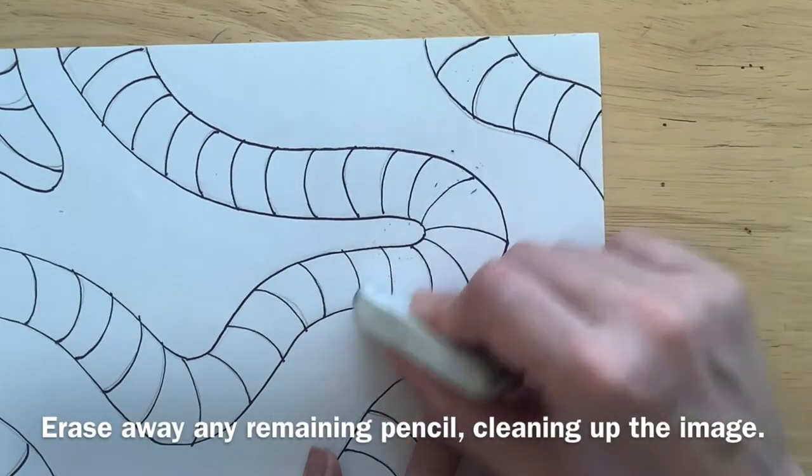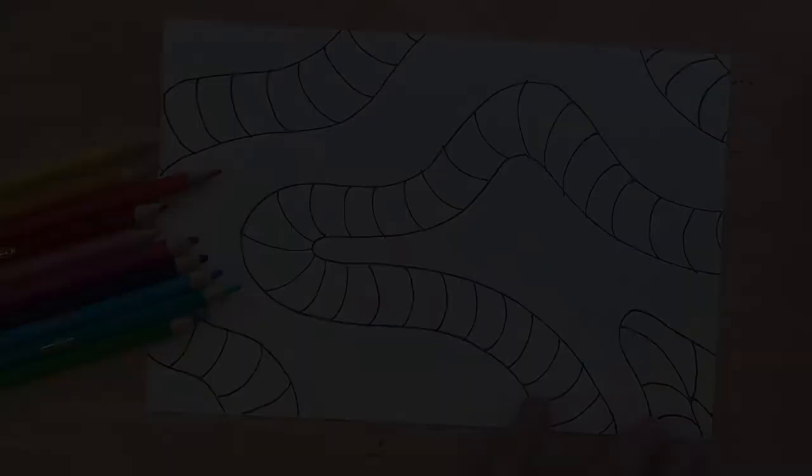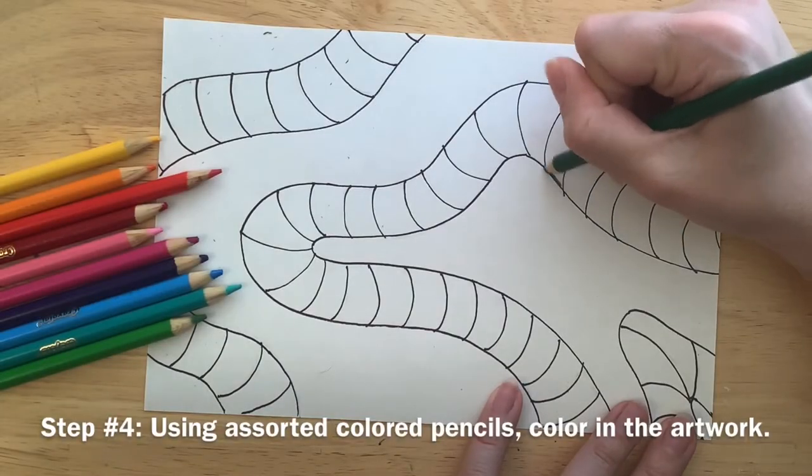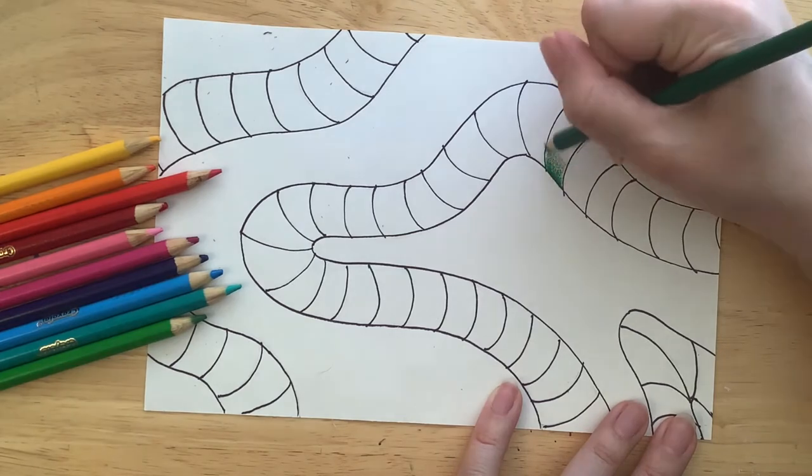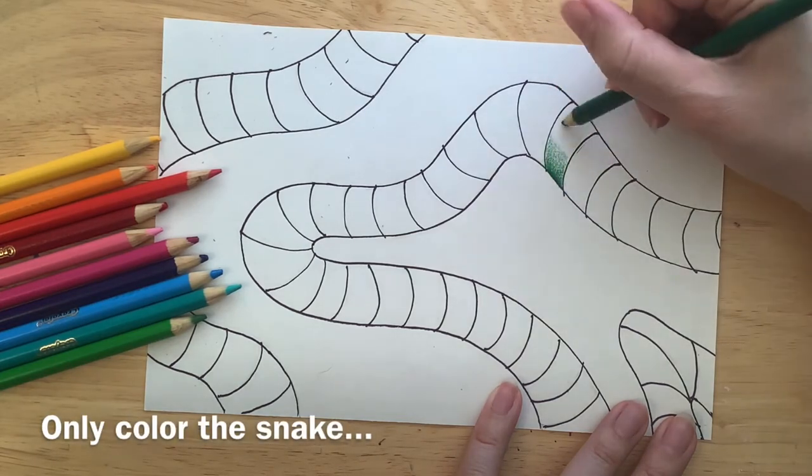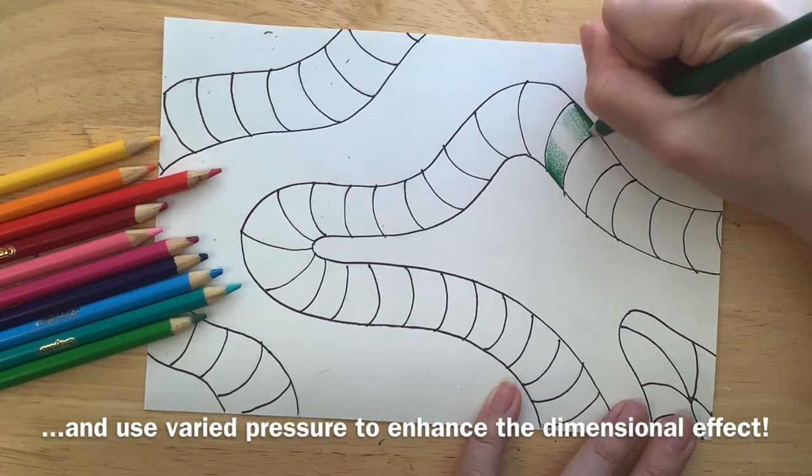Erase away any remaining pencil, cleaning up the image. Using assorted colored pencils, color in the artwork. Only color the snake and use varied pressure to enhance the dimensional effect.